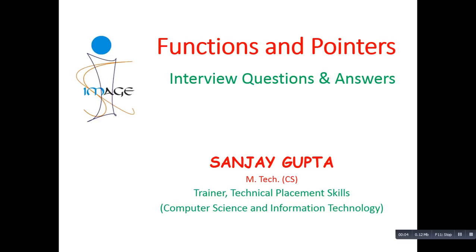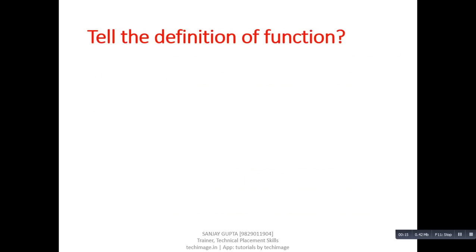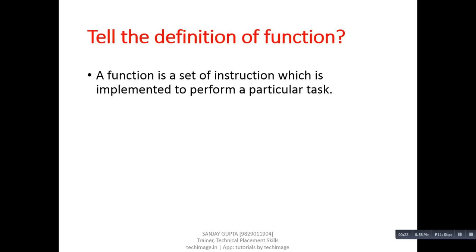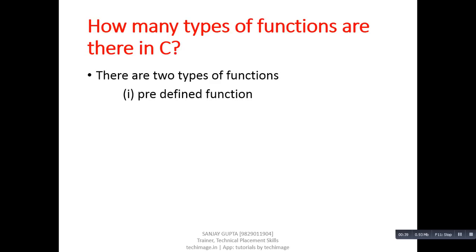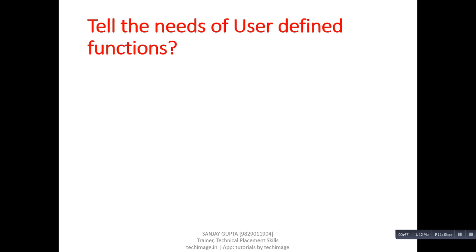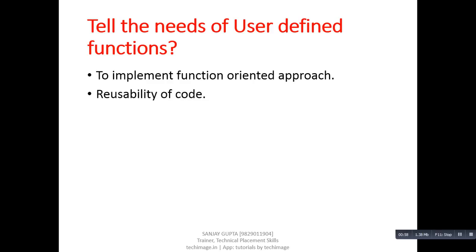Hello friends, I am Sanjay Gupta. In this tutorial I am going to explain functions and pointers related interview questions and answers. First question: tell the definition of function. Answer: a function is a set of instructions which is implemented to perform a particular task. Next question: how many types of functions are there in C? Answer: there are two types — first is predefined function, second is user-defined function. Next question: tell the needs of user-defined functions. Answer: to implement a function-oriented approach we need user-defined functions, and for the usability of code we need functions.